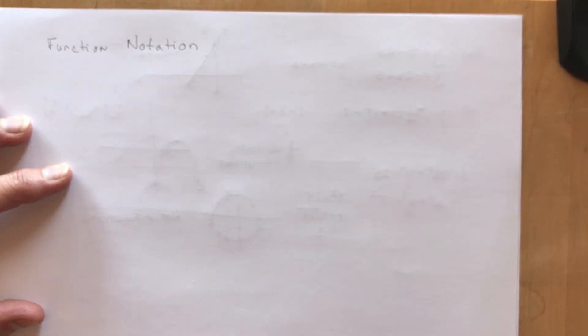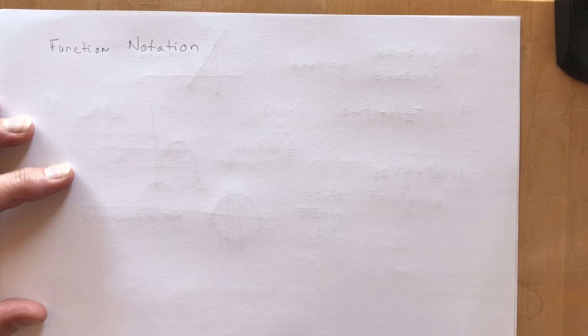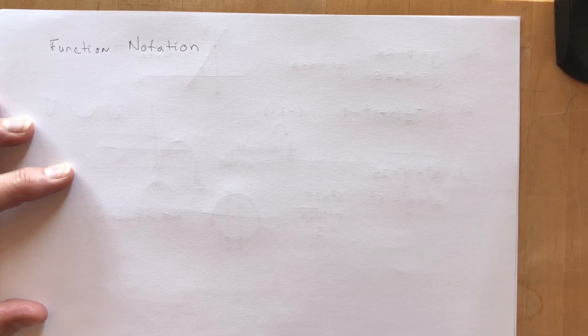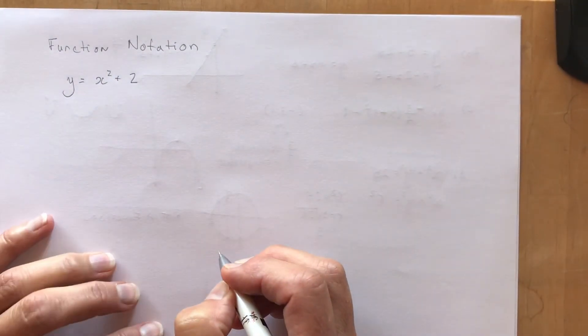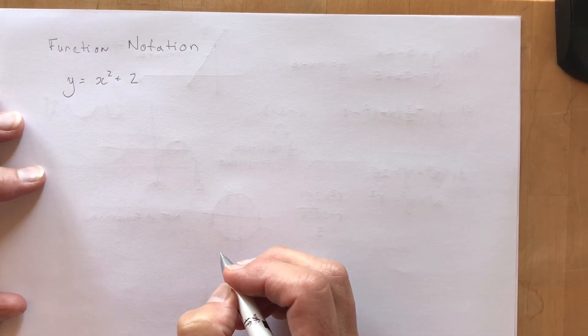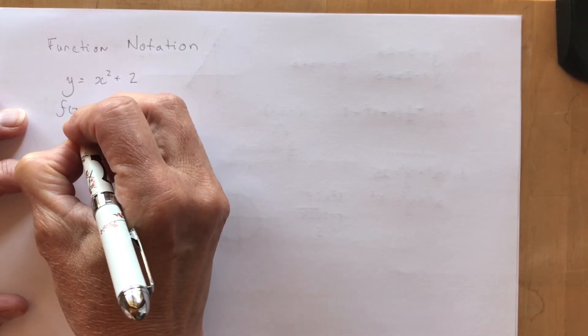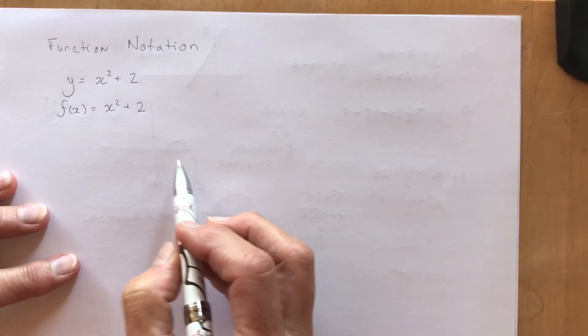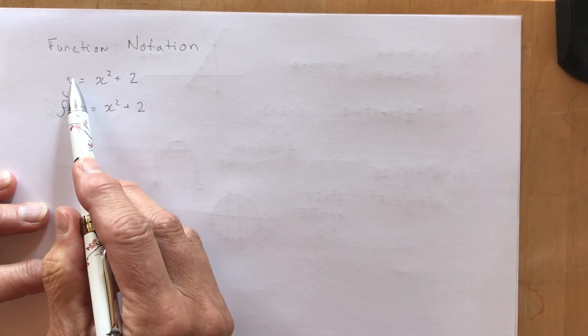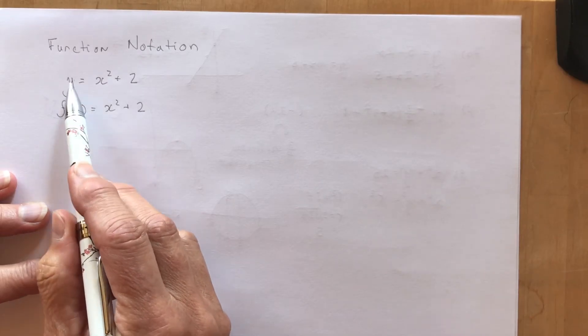All of a sudden you're being asked to use another word for the y value. So if I had a function, let's say y equals x squared plus 2, that's my function. You can write this in function notation simply by making the y f at x. f at x equals x squared plus 2. So all that means is that I'm talking about this function.